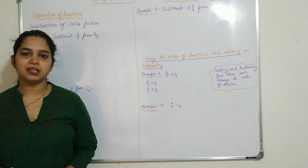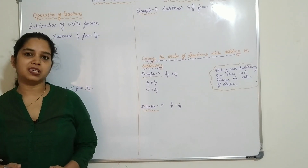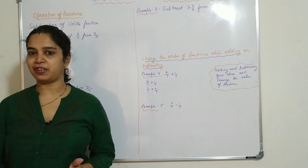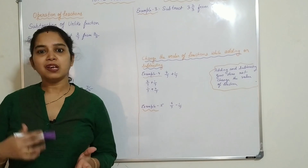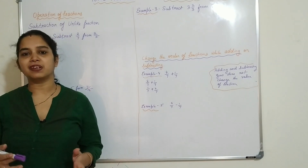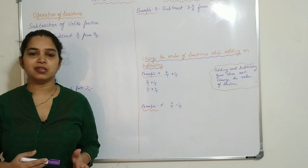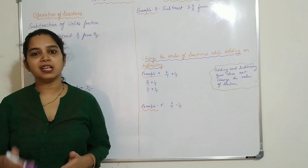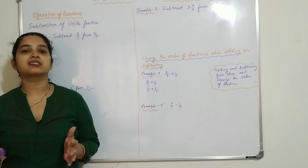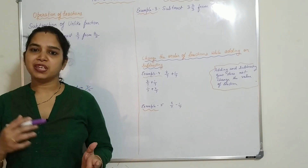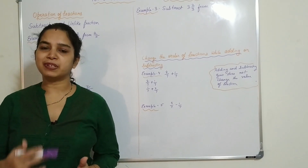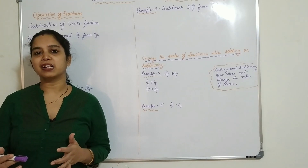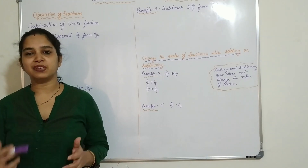Hello my dear students. In an earlier video we studied about the addition of unlike fractions. Unlike fractions are those in which the numerators as well as the denominators are different. So we have to subtract two unlike fractions in a very different way.